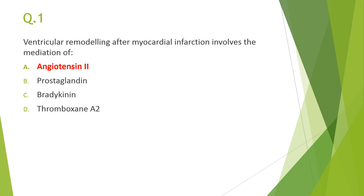The first question asked in the mock test: ventricular remodeling after myocardial infarction involves the mediation of angiotensin 2, prostaglandin, bradykinin, or thromboxane A2. The answer is angiotensin 2, as it causes hypertrophy and hyperplasia of myocardial cells and is responsible for pathological remodeling.